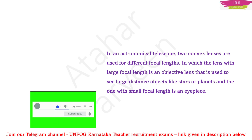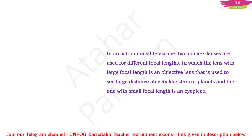In an astronomical telescope, there are two convex lenses used for different focal lengths. The lens with the larger focal length is the objective lens, which is used to see large-distance objects like stars or planets. The other lens is the eyepiece, which has the smaller focal length.